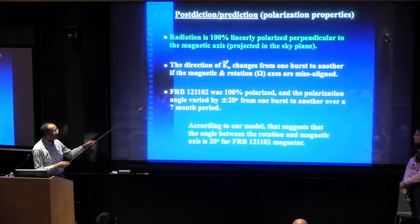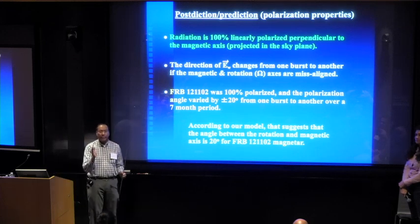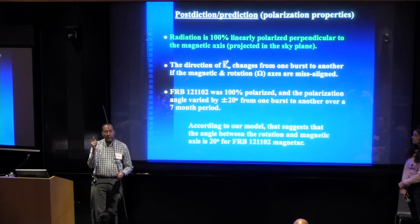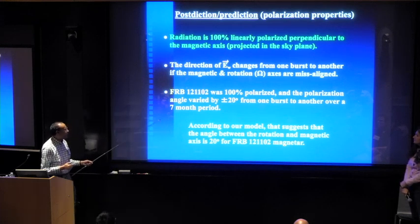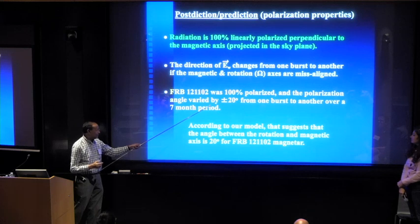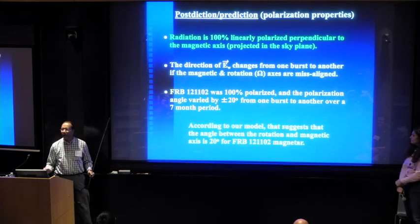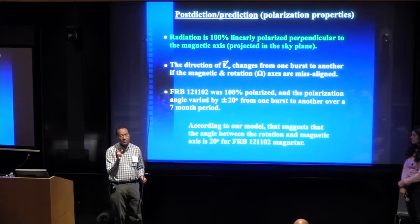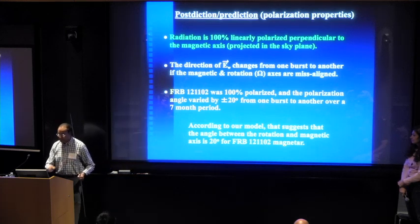The direction of the polarization angle changes only because, in this model, if the magnetic axis is not aligned with the rotation axis... So our interpretation would be that for FRB 121102, which seems to have a polarization angle swing of 20 degrees, there is an angle between the magnetic axis and the rotation axis that is about 20 degrees. That would be the interpretation according to this model.